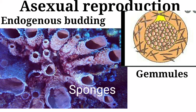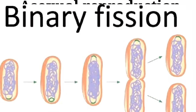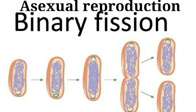An example of endogenous budding is gemmules, which can be seen in freshwater sponges. The next type of asexual reproduction is binary fission. Binary fission is a type of asexual reproduction in which a fully grown parental organism divides into two equal daughter cells under favorable conditions.